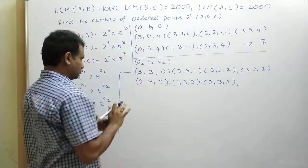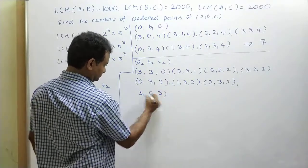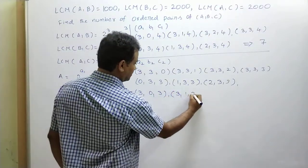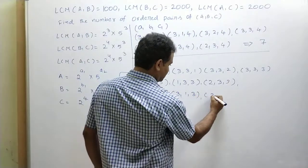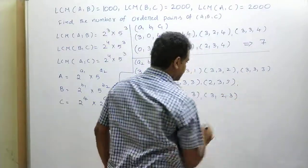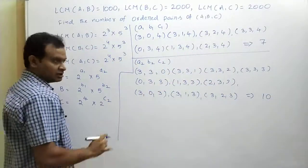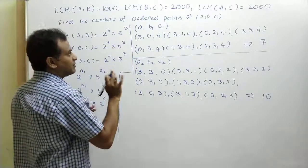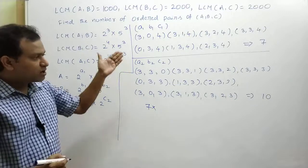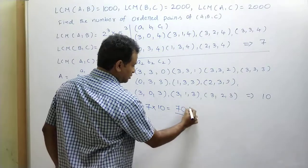If a2 = 3 and c2 = 3, then b2 can be 0, 1, or 2 — again not 3 since (3,3,3) already counted. That gives (3,0,3), (3,1,3), (3,2,3) — three more possibilities. Total for (a2, b2, c2) is 4 + 3 + 3 = 10. Therefore, total ordered pairs (a, b, c) = 7 × 10 = 70.